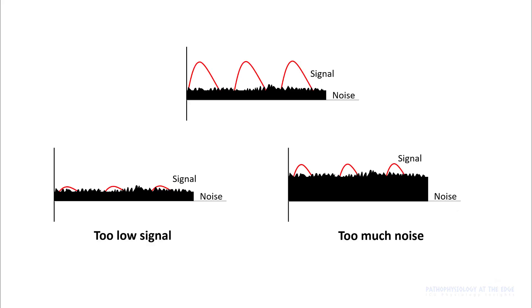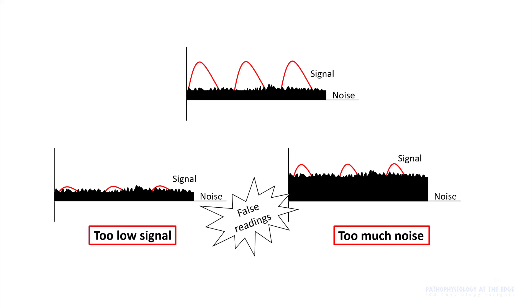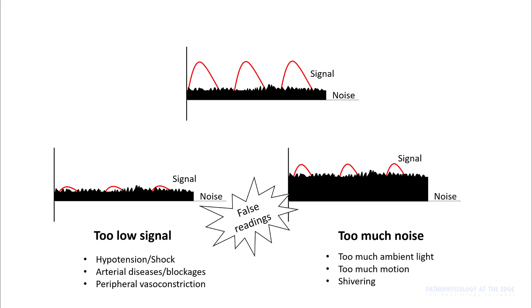The main problem with pulse oximetry is your signal-to-noise ratio. If you have too low a signal or too much noise, you can get false readings. Too low signals can be seen in hypotension, peripheral artery disease, blocks, and peripheral vasoconstriction. You can have too much noise if there is shivering, too much motion, or too much ambient light.